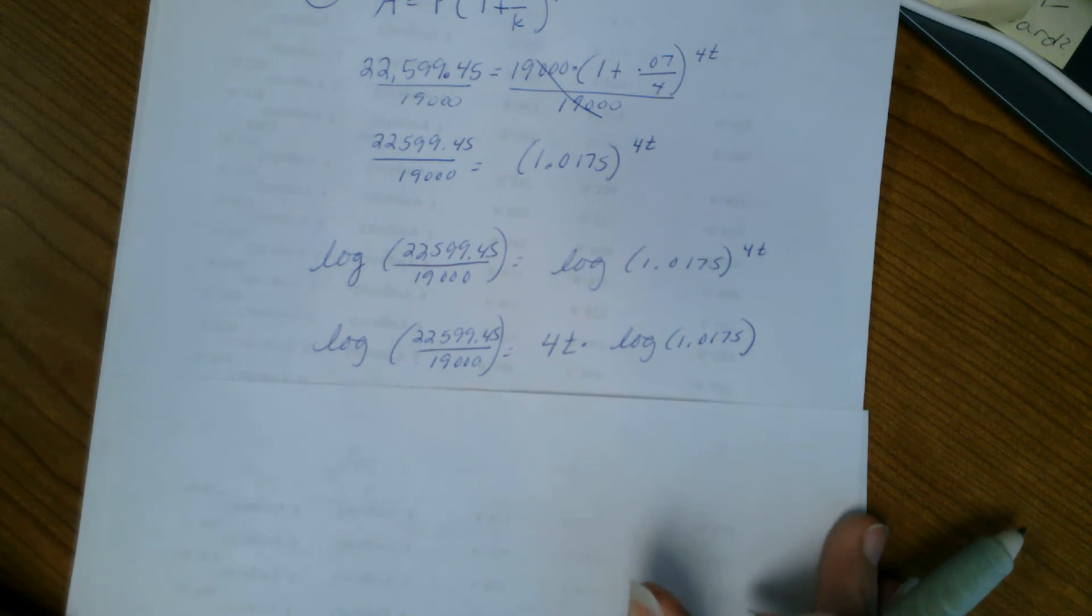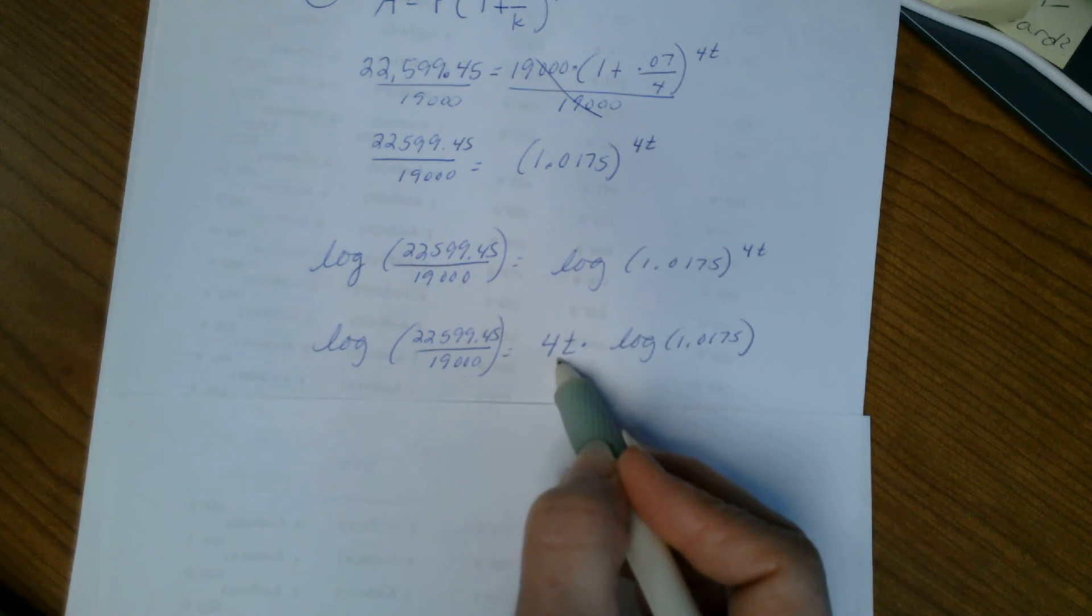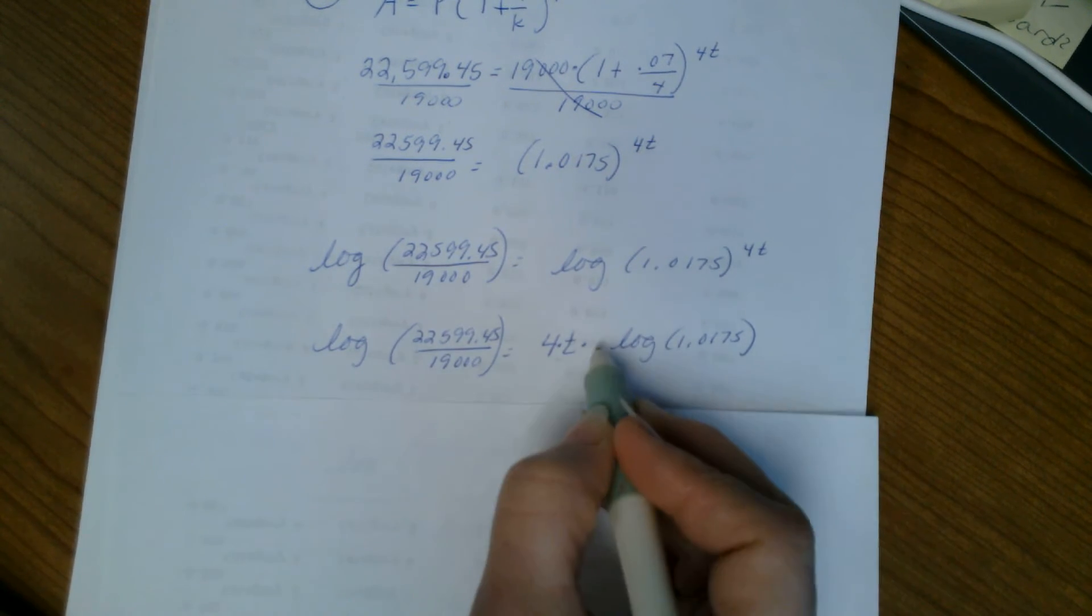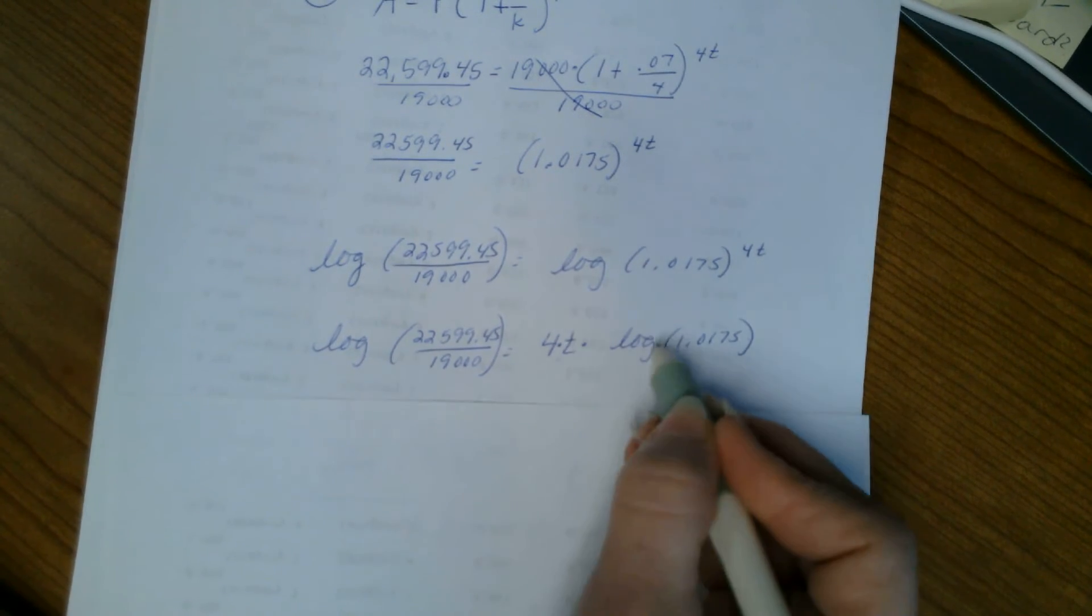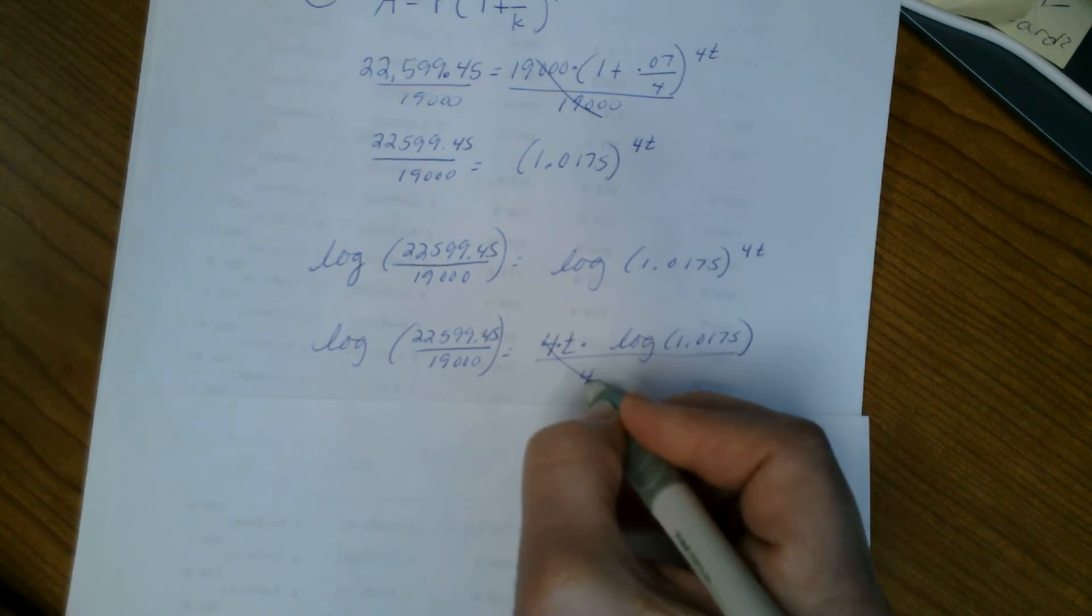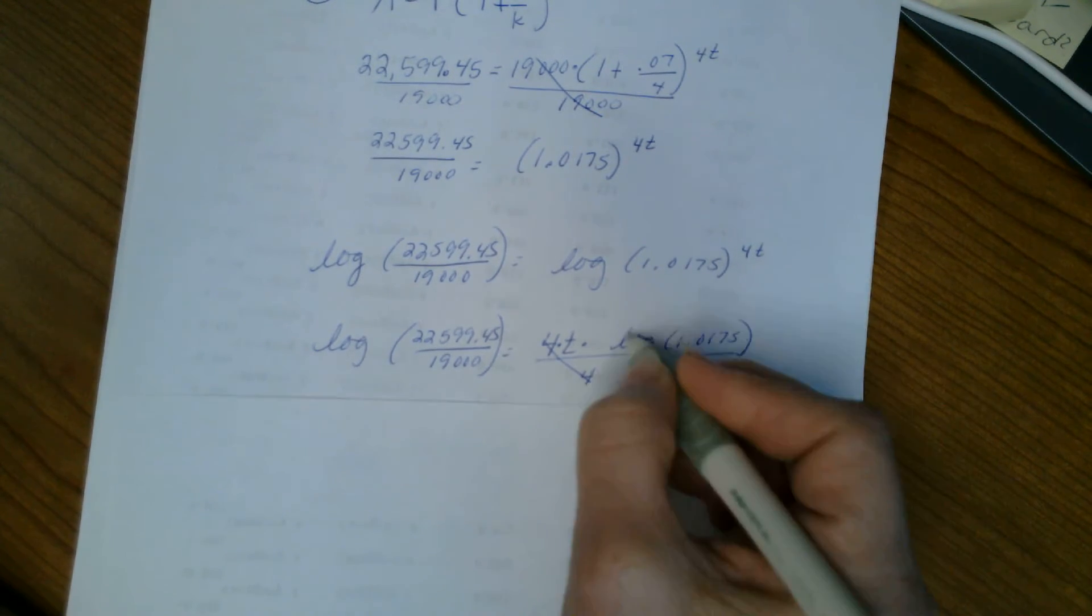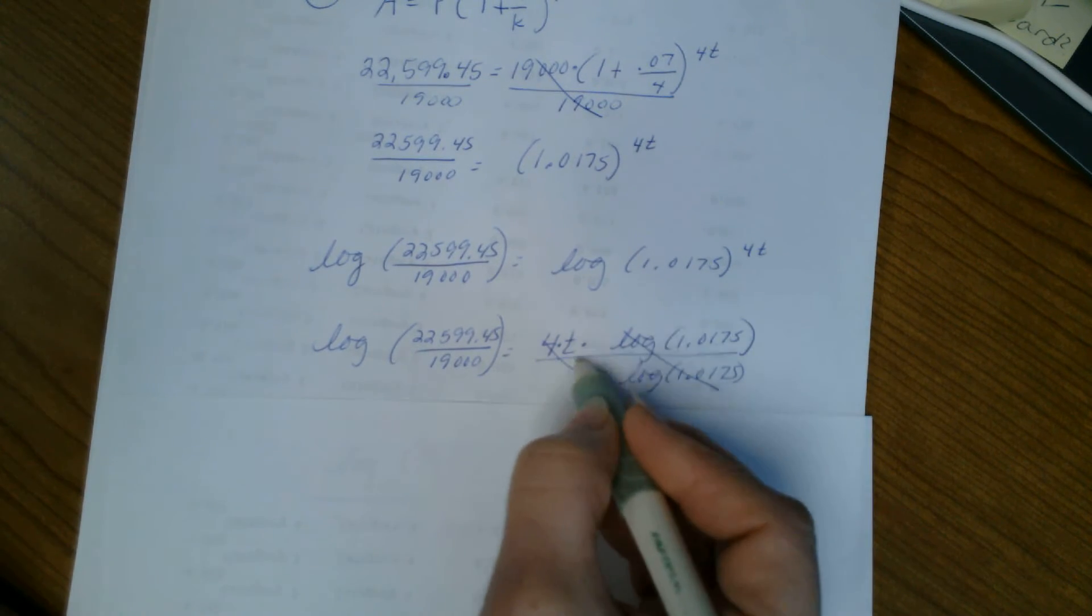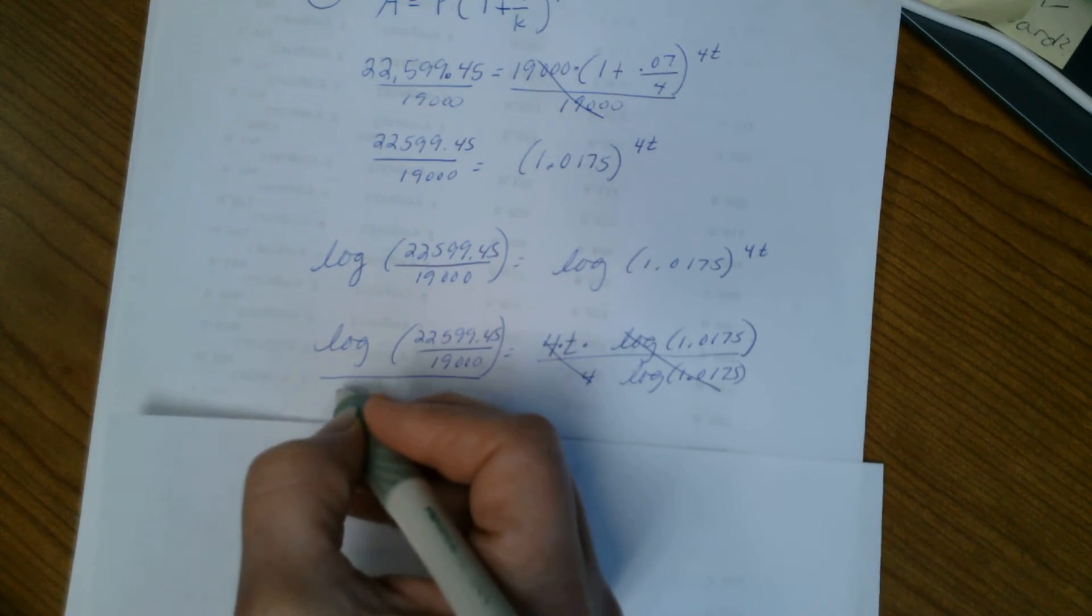All right, then once I get the exponent down, now I'm still focused on this t variable. You're trying to solve for t, so it's got a multiplier of 4 and a multiplier of this log 1.0175. Both of those are just constants of some sort, so we divide by the 4 to get the 4 to cancel, and we divide by the log, whatever log of 1.0175 is, we divide that out, thus leaving just the t. So we divide on that side, so thus we have to divide on this side, the 4 and the log 1.0175, giving us this problem to get out of our calculator.